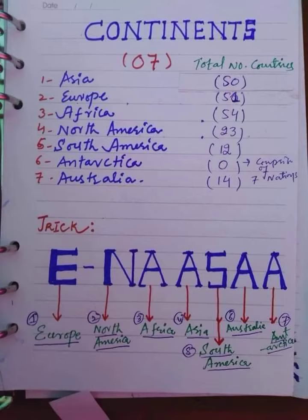Although Antarctica has zero countries, it comprises seven nations. Number seven: Australia, which contains 14 countries. To remember these seven continents, there is a mnemonic.